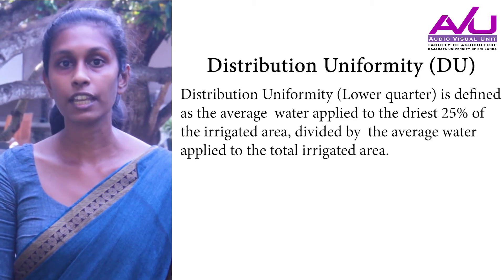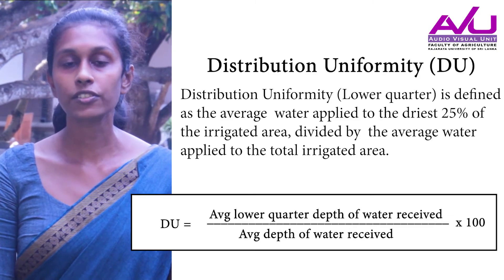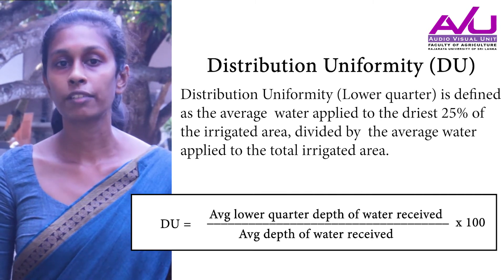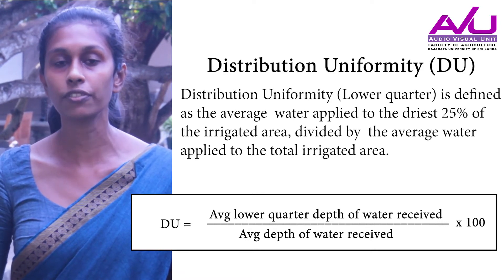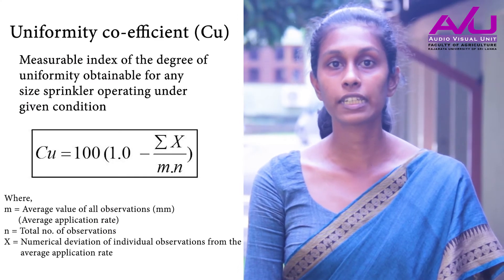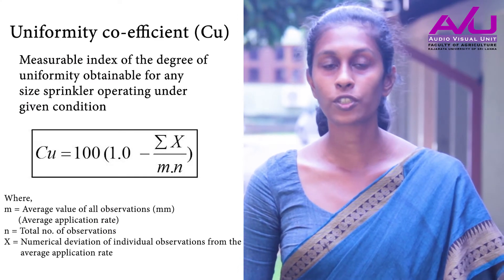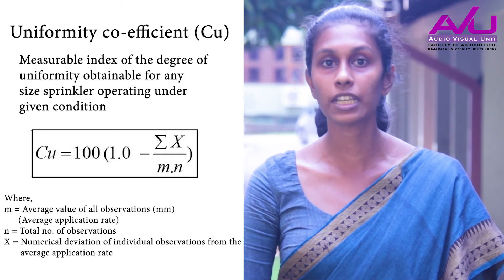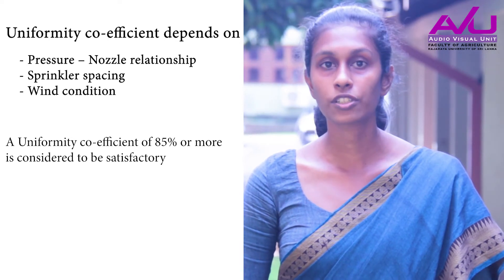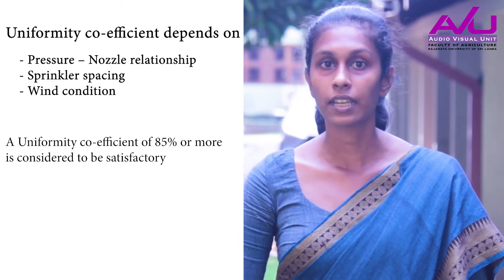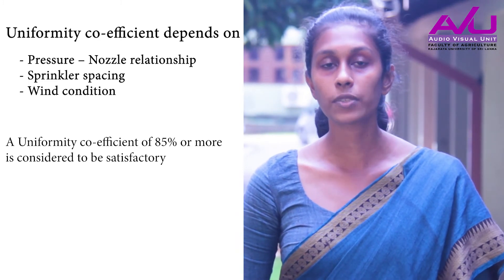The CAN experiment helps determine the distribution uniformity and uniformity coefficient. Distribution uniformity is the average water applied to the lowest 25% of the irrigated area divided by the average water applied to the total irrigated area — this indicates how evenly water is applied across the field. The uniformity coefficient is a measurable index of the degree of uniformity obtained for a sprinkler system under a given condition. It depends on the pressure-nozzle relationship, wind conditions, and the sprinkler spacing. The uniformity coefficient should be 85% or more for a satisfactory level.